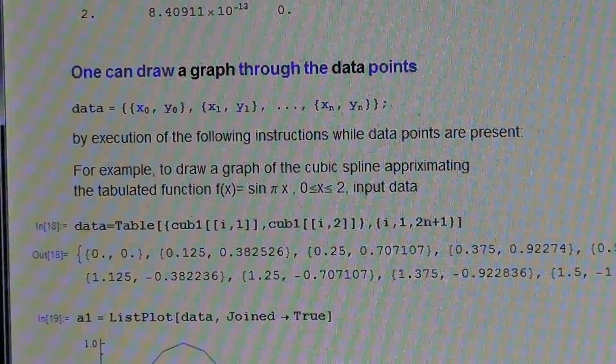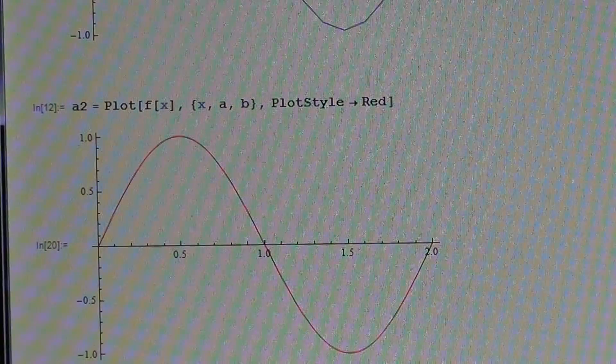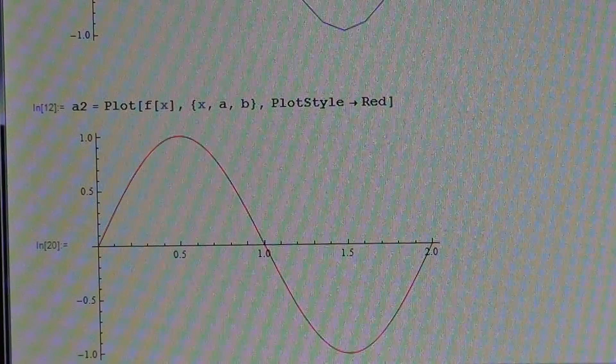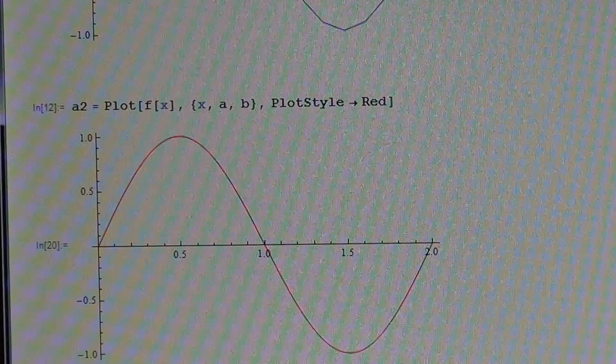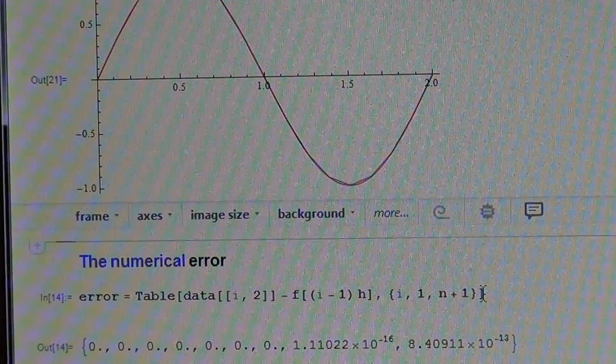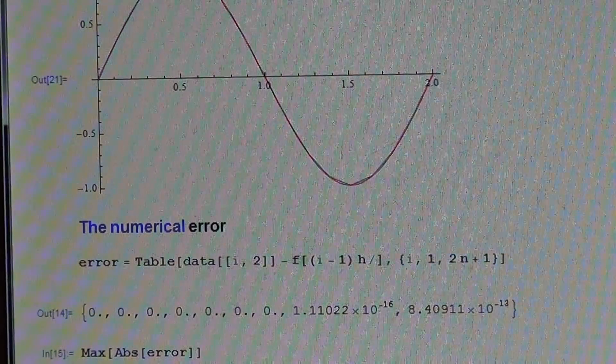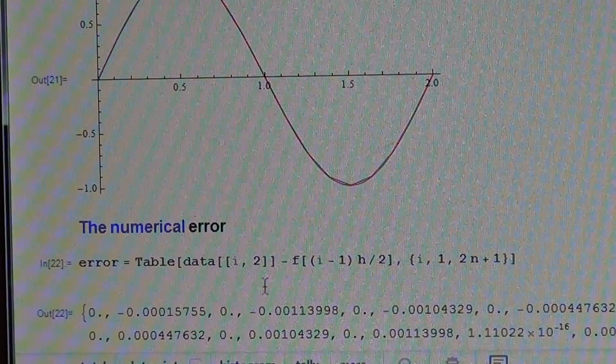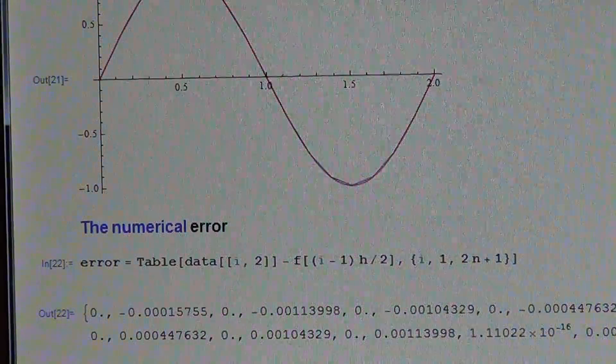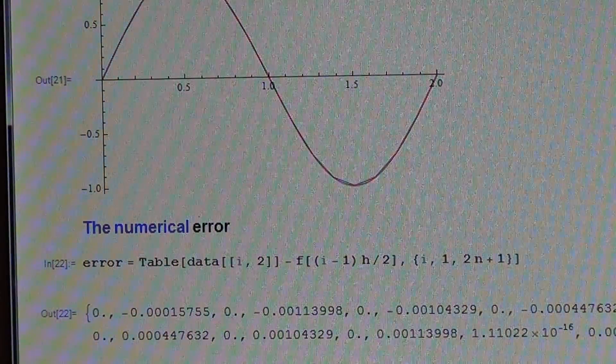We take the data points. We have more points. We draw the graph. That is more similar to sine as before. Let us show the sine on the same system. This is very much the same. Let us go for the numerical value. We have to put here 2 and divide by 2 again because it's denser. We have very good approximation. The error is very good, but not zero because we consider the table at points between the interpolating points also.